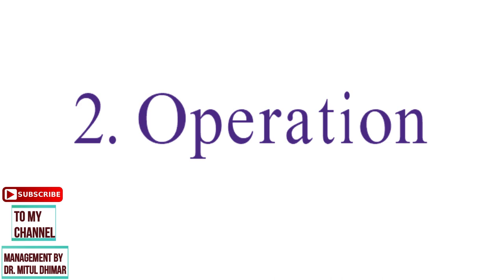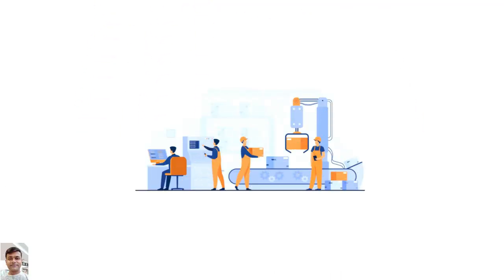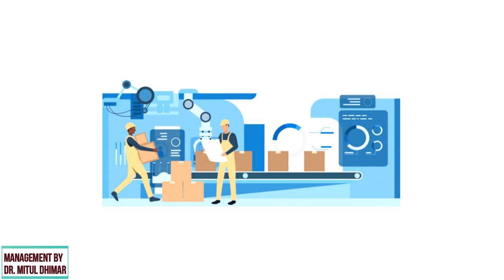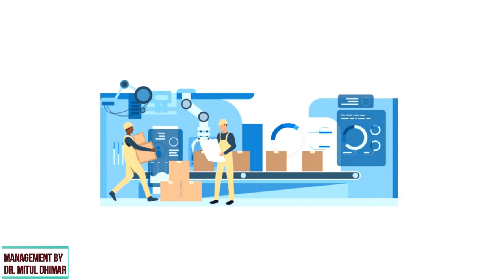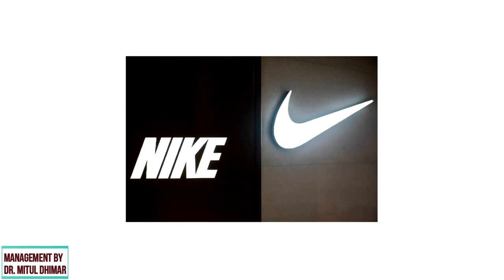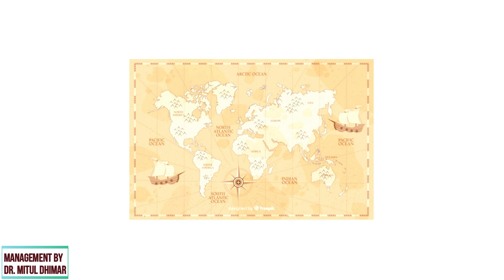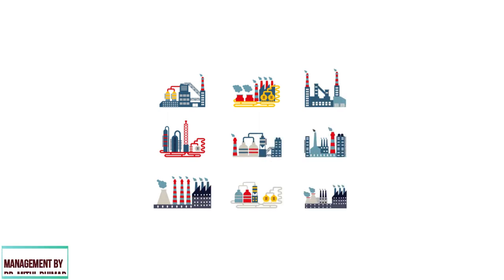Point number two: operations. Operations include all activities through which inputs are turned into outputs that an organization sells. Operation activities include manufacturing, assembling, testing, packaging, etc. For example, Nike. Nike is present globally and each of its offices caters to a large geographic area of many countries. There are more than 500 factories producing Nike products in 42 countries.